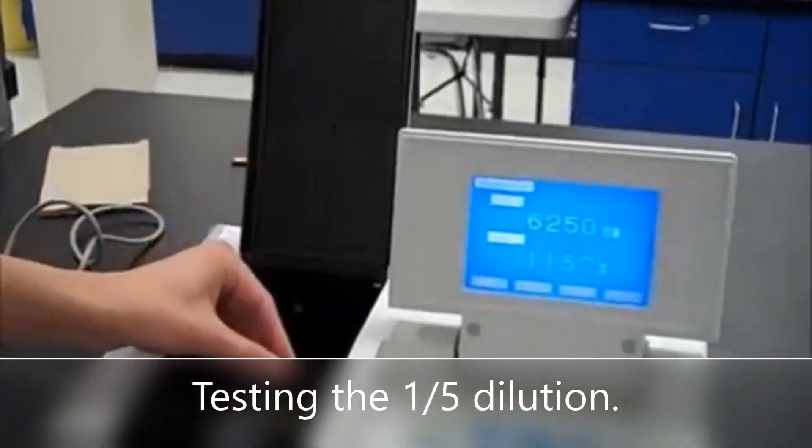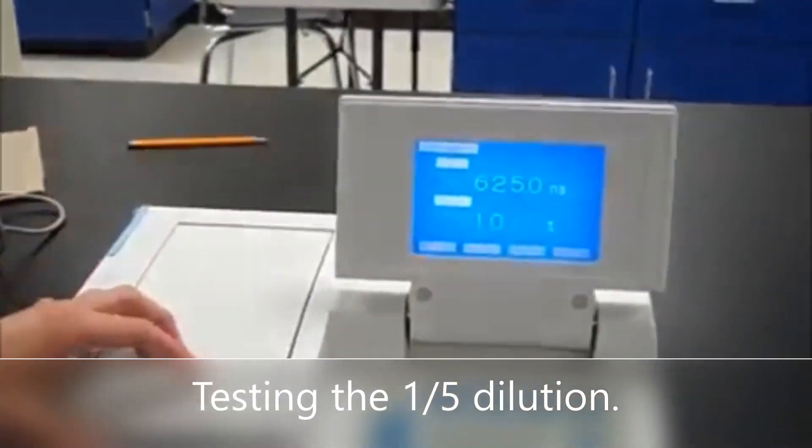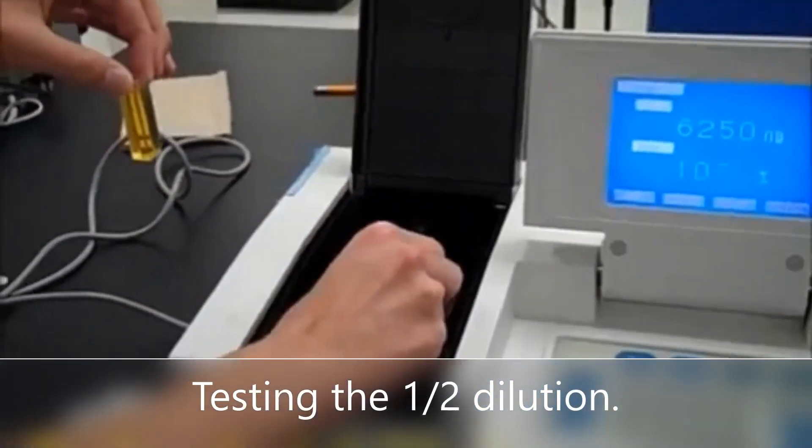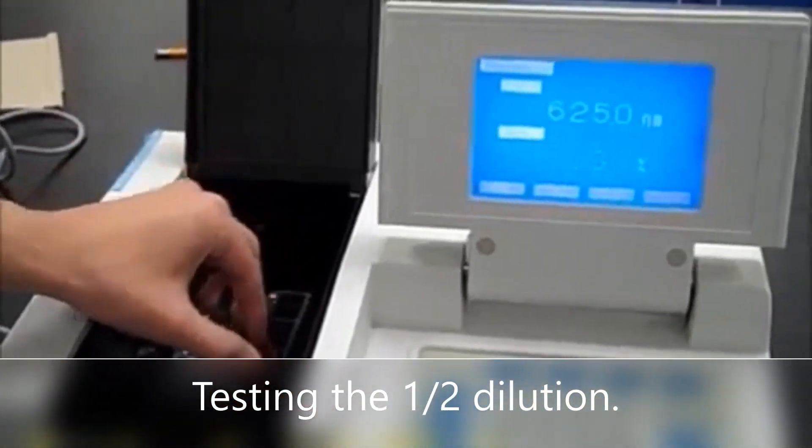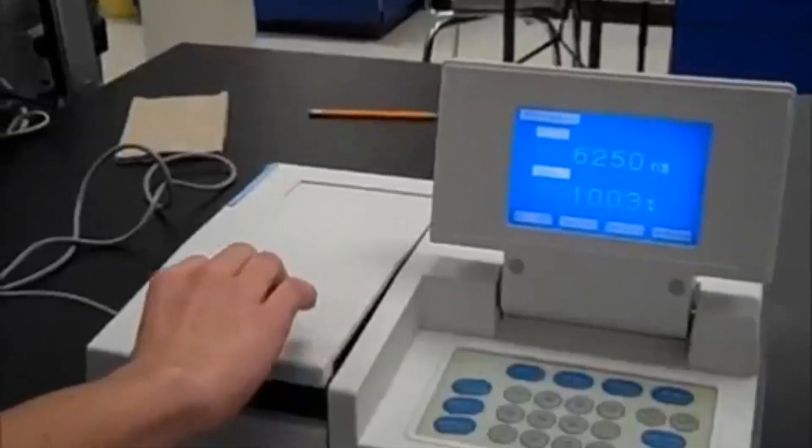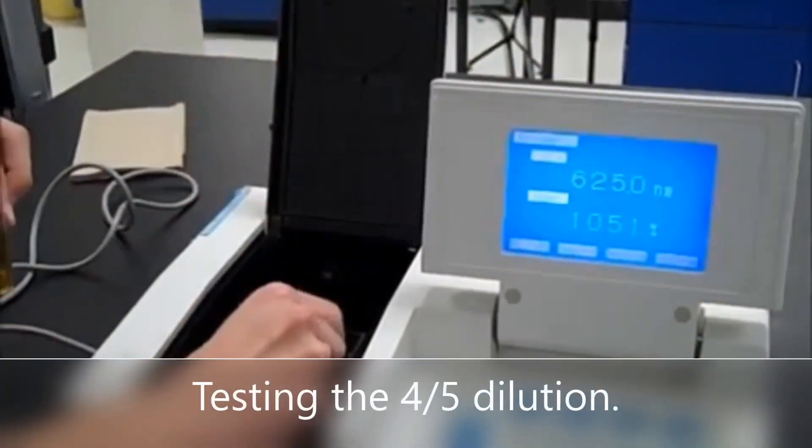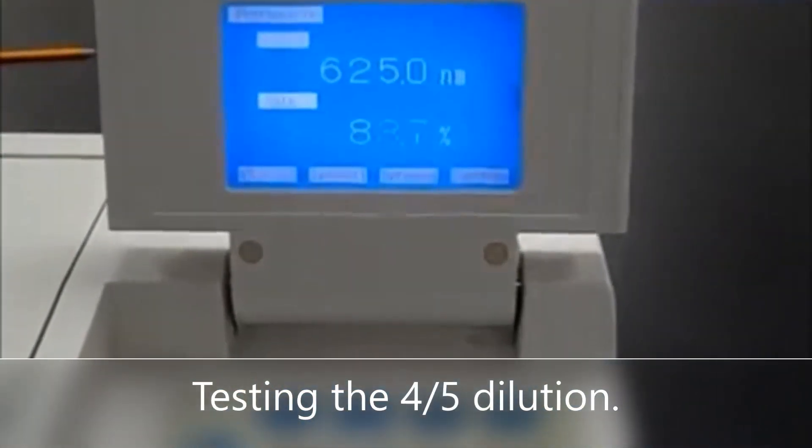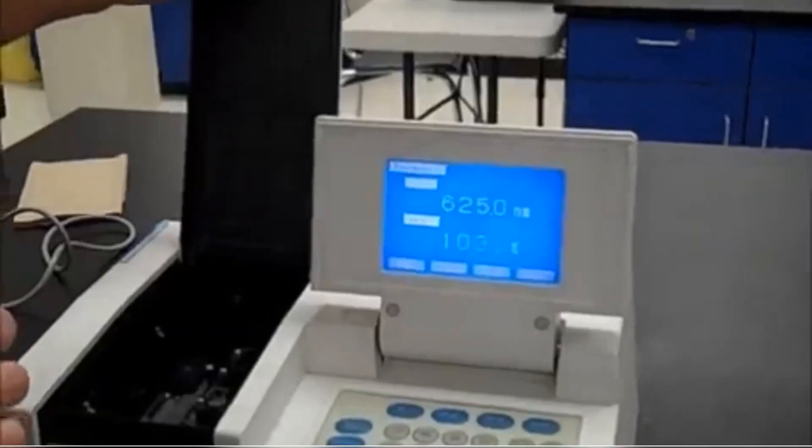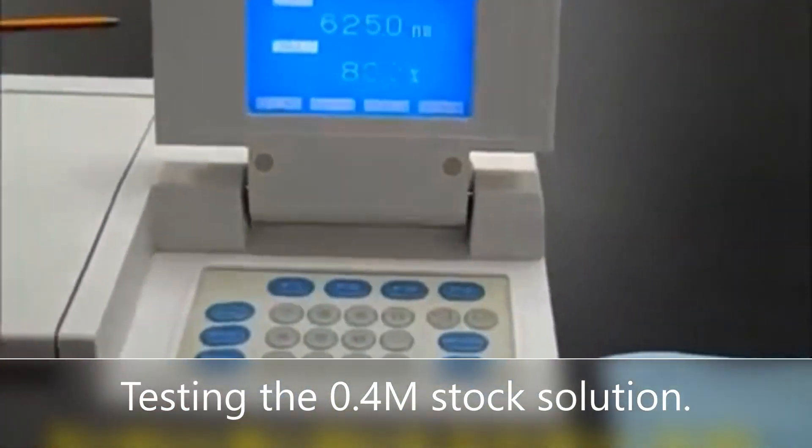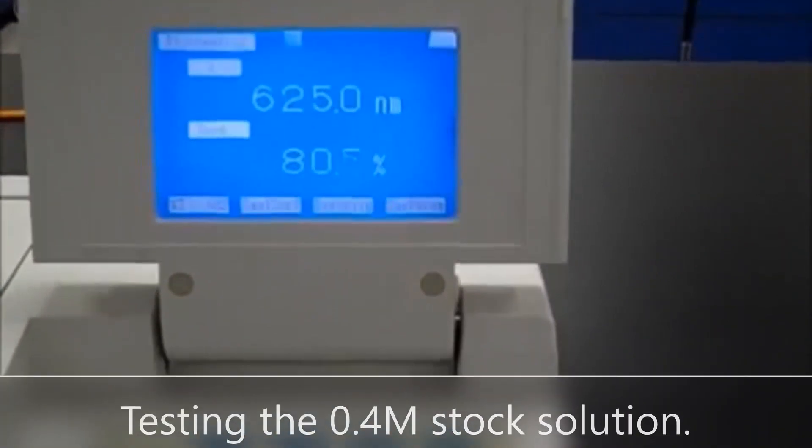Next we'll test the one-fifth dilution. The transmittance for this sample was 96.3. The one-half dilution sample had a percent transmittance of 90.3. The four-fifths dilution sample had a percent transmittance of 83.8. And finally the 0.4 stock solution had a transmittance of 80.6 percent.